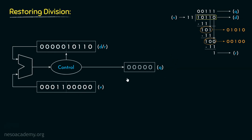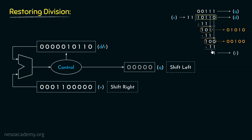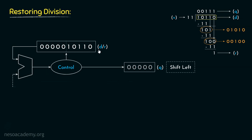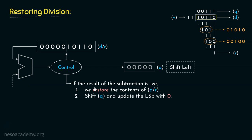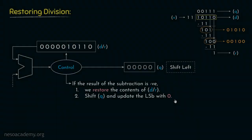The quotient register Q is updated by performing left shifts, dictated by the control unit. In every iteration, the divisor in register V is shifted towards the right. The control decides the update of the DR register and the Q register based on the outcome of the adder-subtractor. If the result of the subtraction is negative, we restore the contents of DR, then shift Q left and update the LSB with 0.